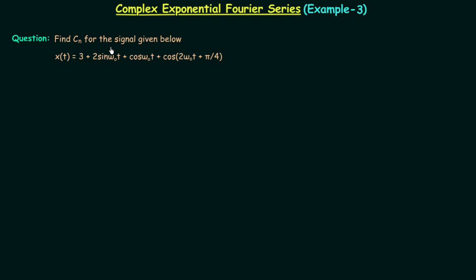In this question we are required to find Cn for the signal xt. The expansion of signal xt is already given in the question, but this expansion is not the complex exponential Fourier series expansion. To find different values of Cn it is important to have the complex exponential Fourier series expansion.